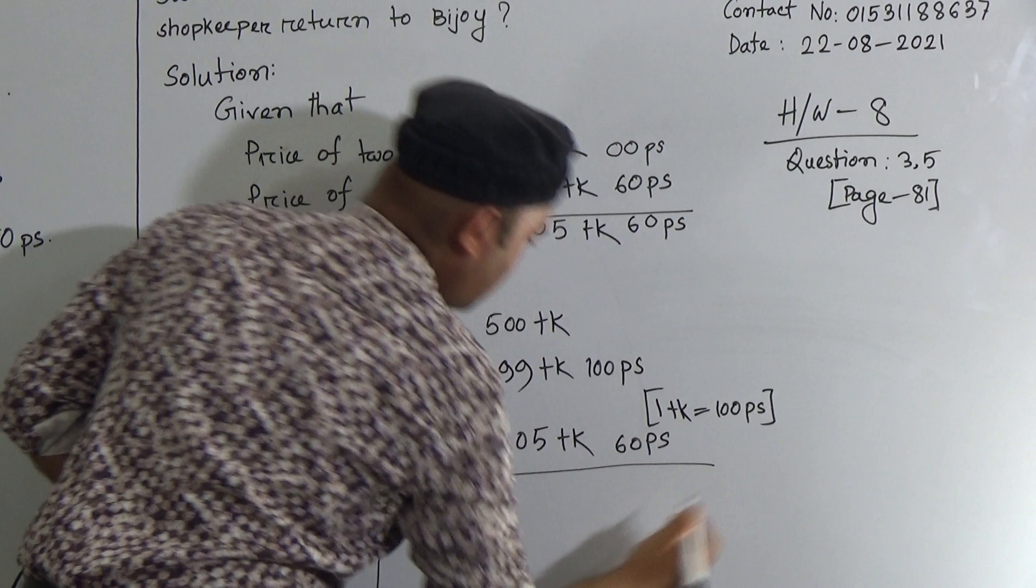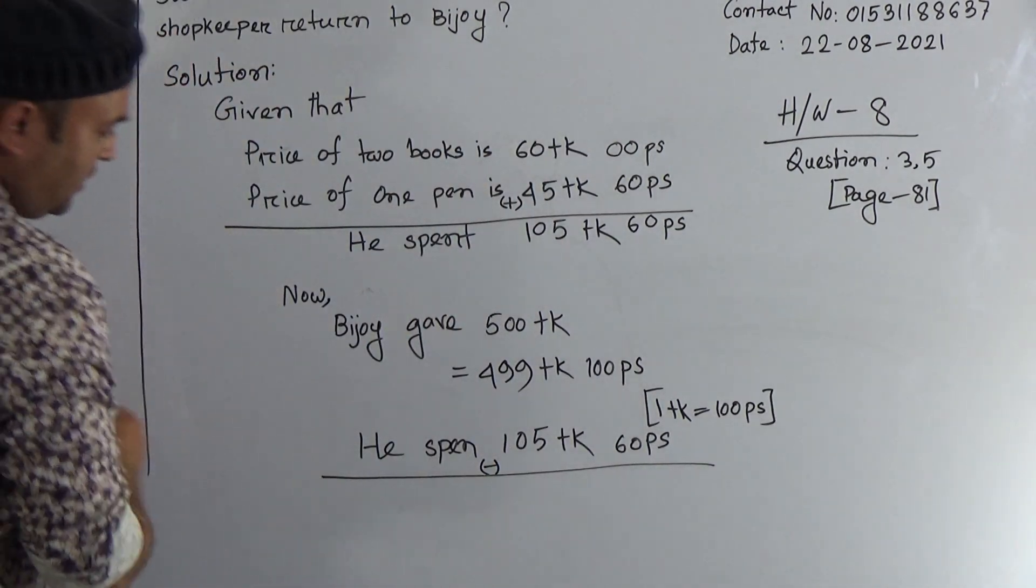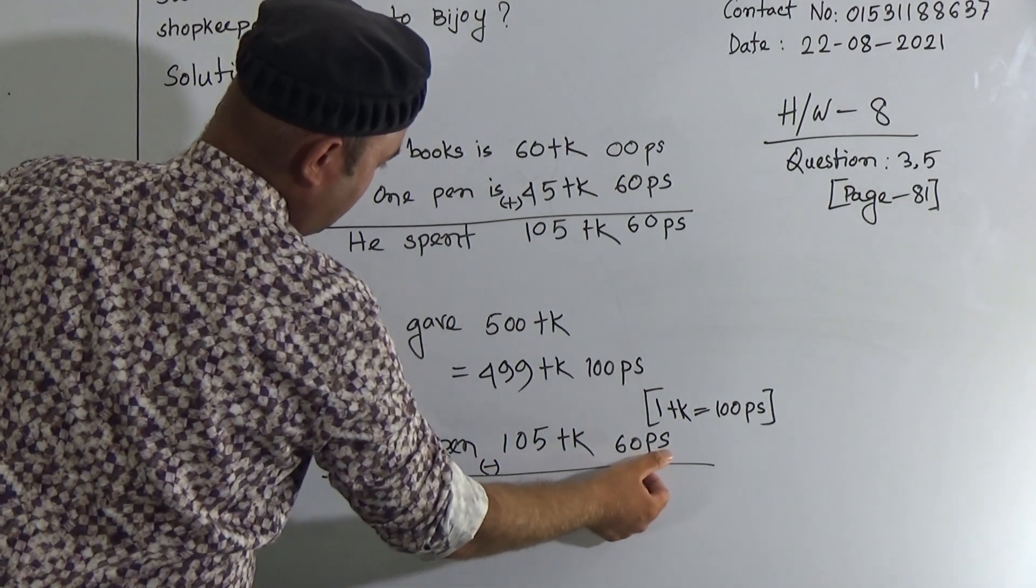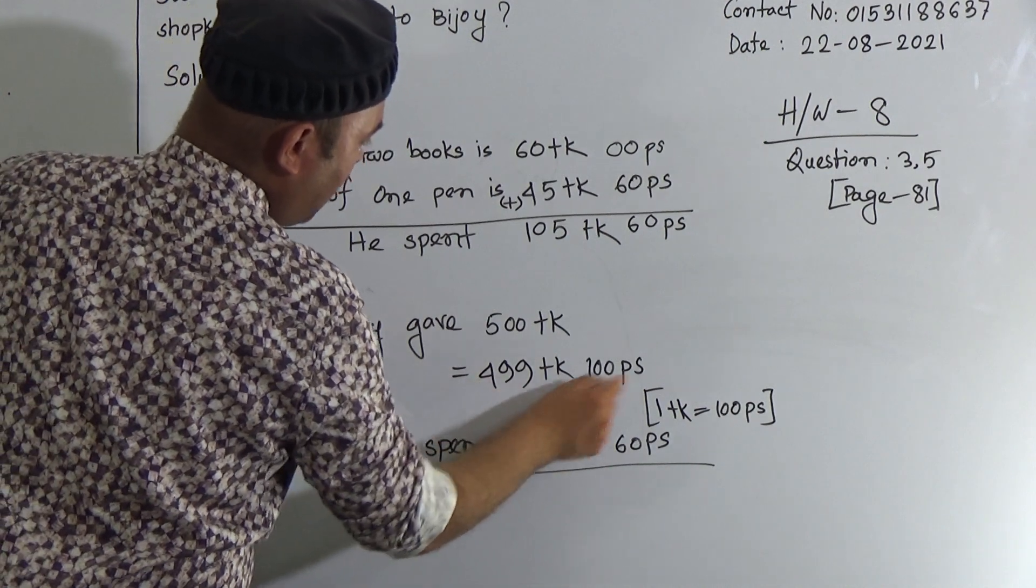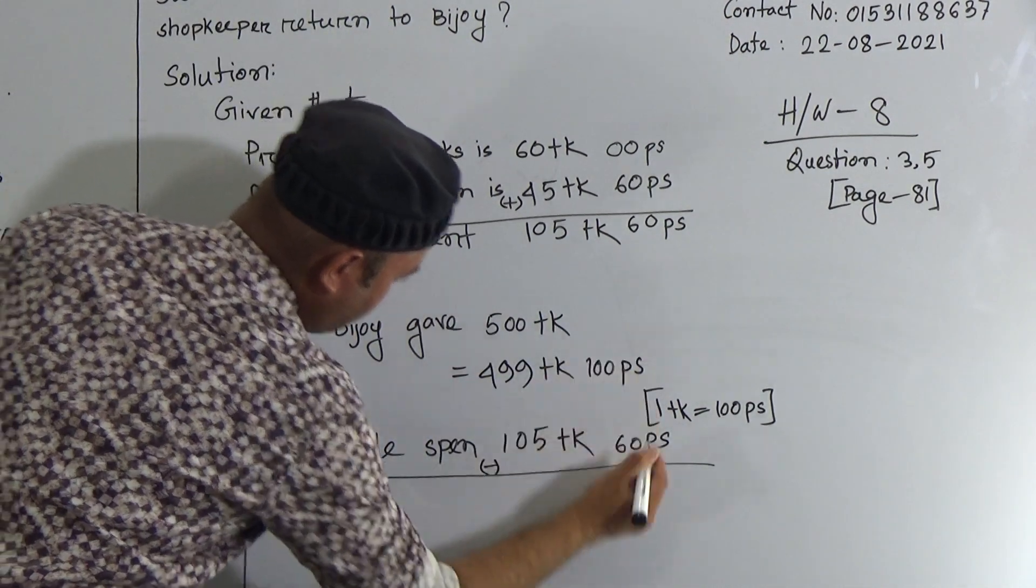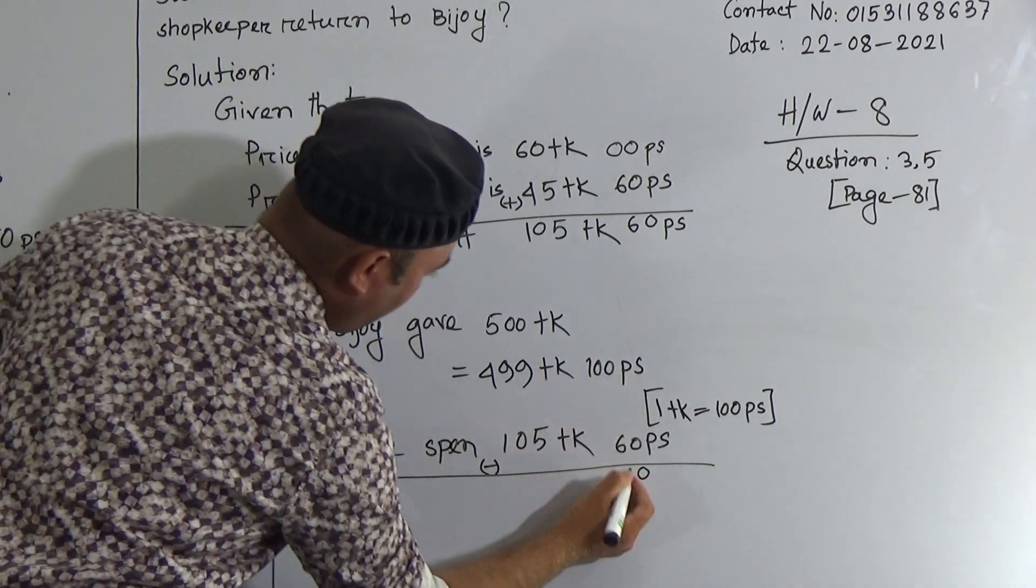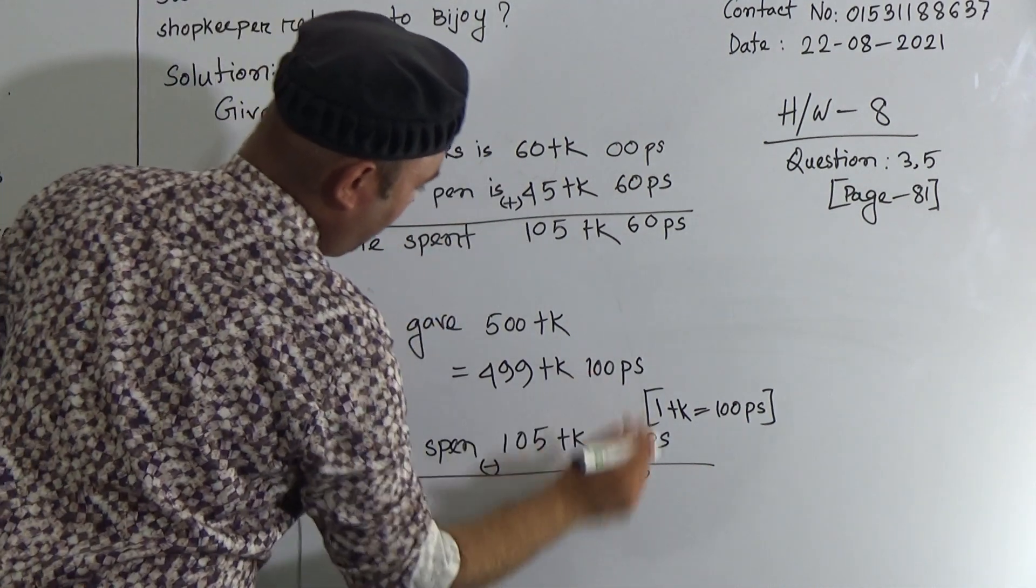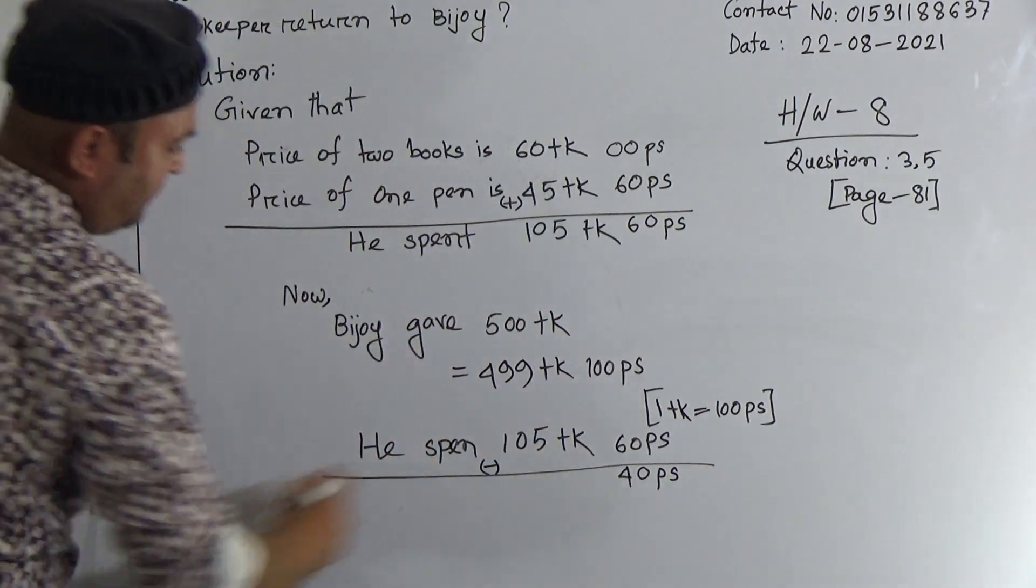So to find the answer, how much the shopkeeper return to Bijoy, we have to subtract 105 taka 60 poises from 499 taka 100 poises. Now 0 from 0 is 0, 6 from 0, here 6 from 10 is 4 and you have carry 1. 1 from 1 is 0, so here is 40 poises.